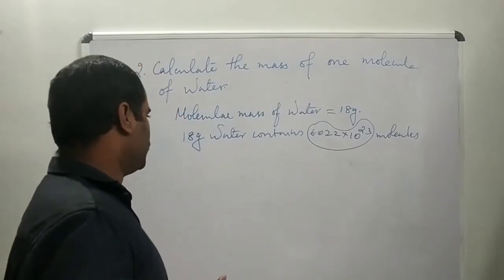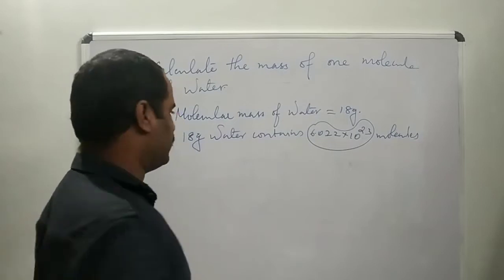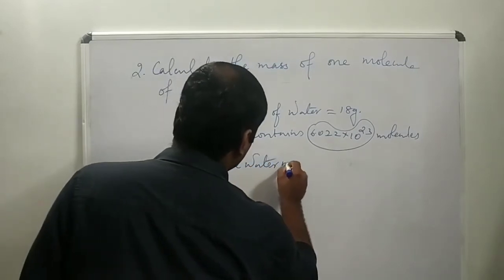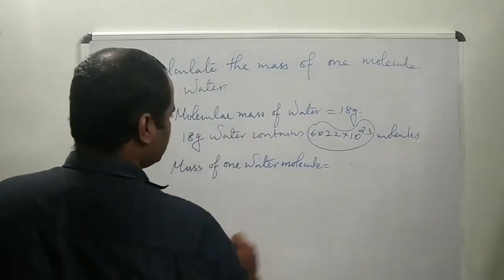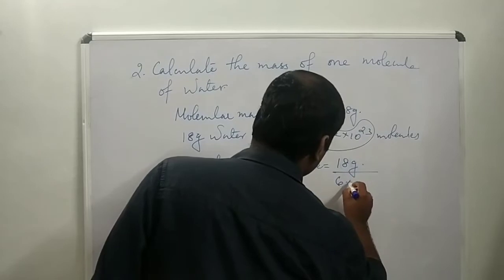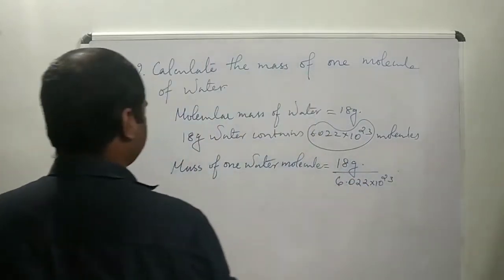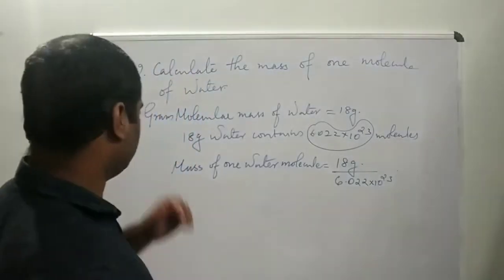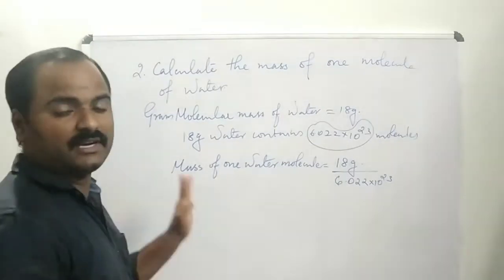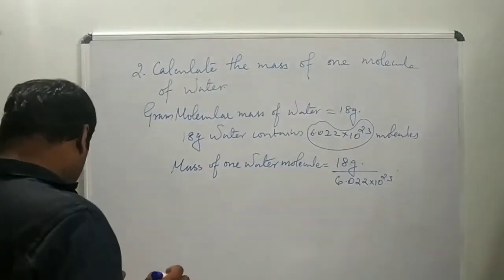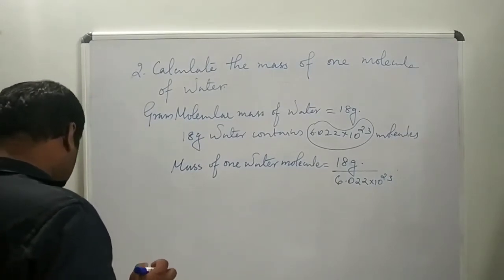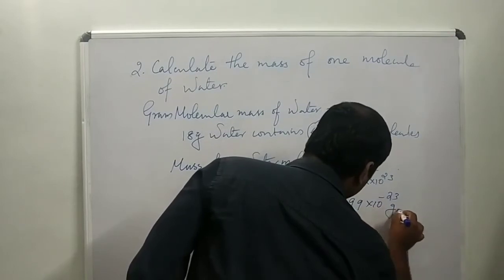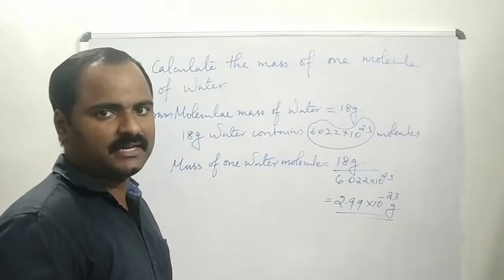The mass of one water molecule equals 18 grams divided by Avogadro's number. So mass of one water molecule = 18 grams divided by 6.022 × 10²³. This 18 grams is the gram molecular mass of water. Therefore the answer is 2.99 × 10⁻²³ grams.